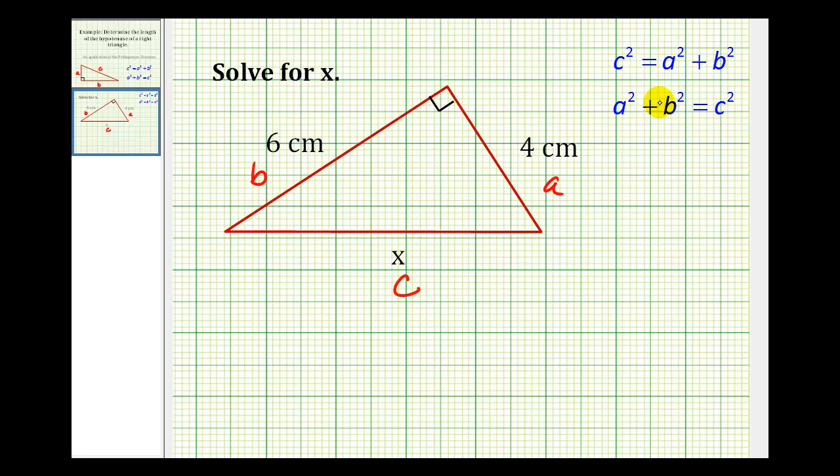So if we apply the Pythagorean Theorem, let's use this first equation. So we'll have C squared, which in this case will be X squared, equals A squared, which would be four squared, plus B squared, which would be six squared.